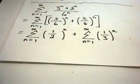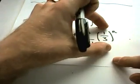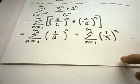And again, I notice these are geometric series. The numbers inside are between negative 1 and positive 1. Both of these are going to converge.